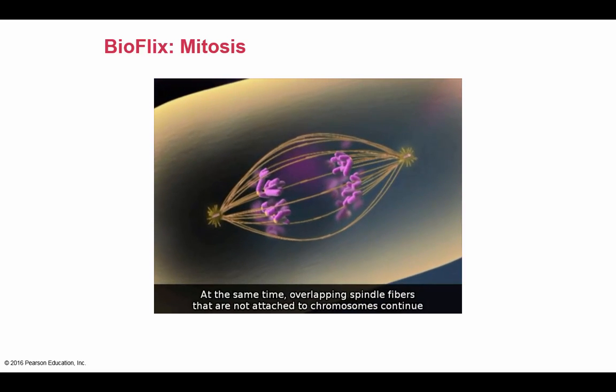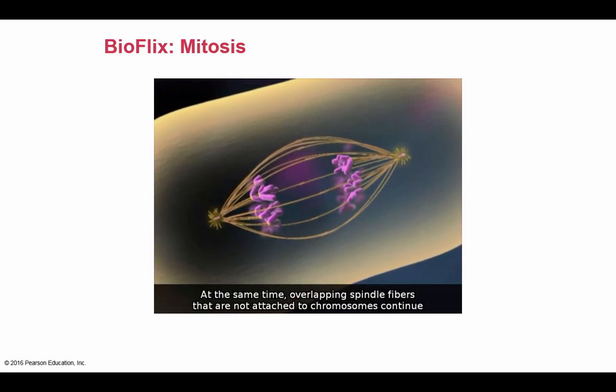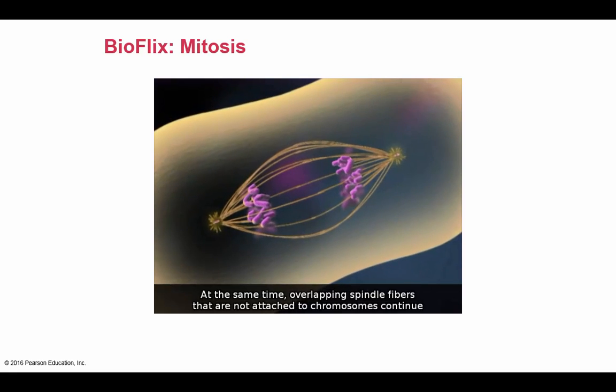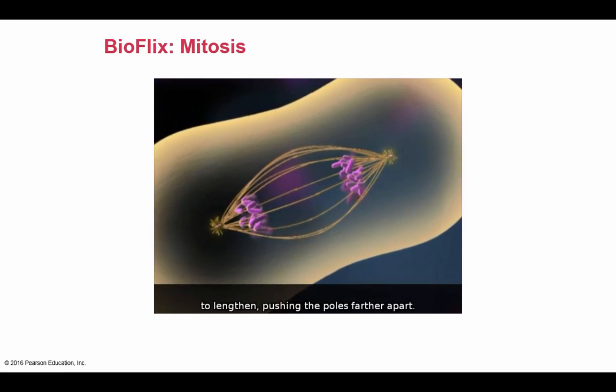At the same time, overlapping spindle fibers that are not attached to chromosomes continue to lengthen, pushing the poles farther apart.